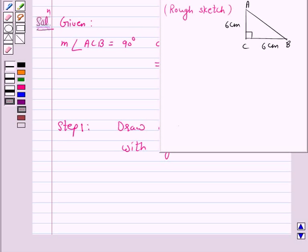We will start the actual construction with the help of this rough sketch. Our next step is to draw a line segment CB of length 6 cm.